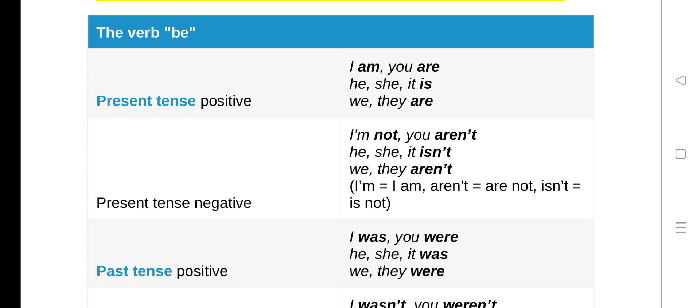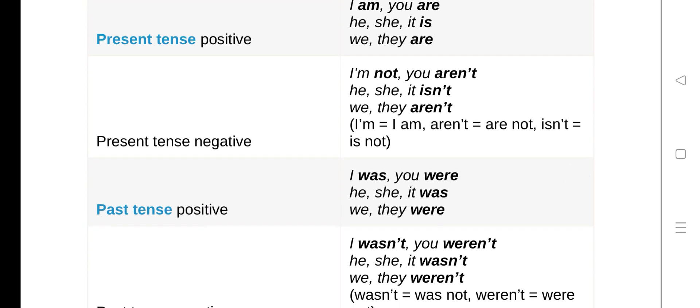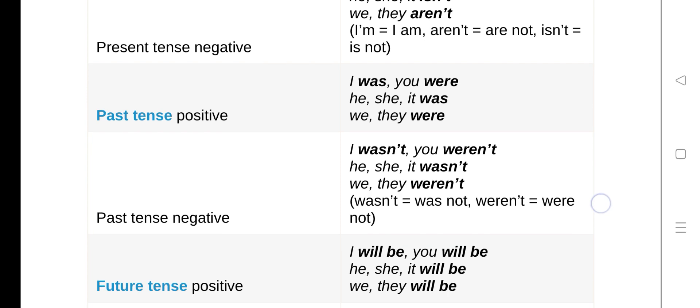I am not, you are not or you aren't, he/she/it isn't or is not, we/they are not or aren't. So this is the use in the present tense. Let's see the past tense.